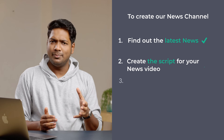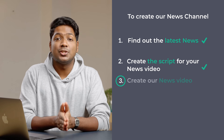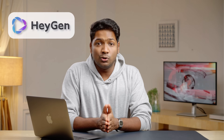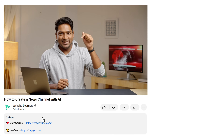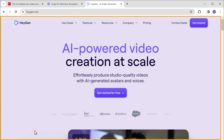Now once you've got the script, let's go to the third step, which is to create our news video. To create our news video, we're going to use a tool called HeyJet. To use the tool, just click the link in the description and it'll take you to this page.